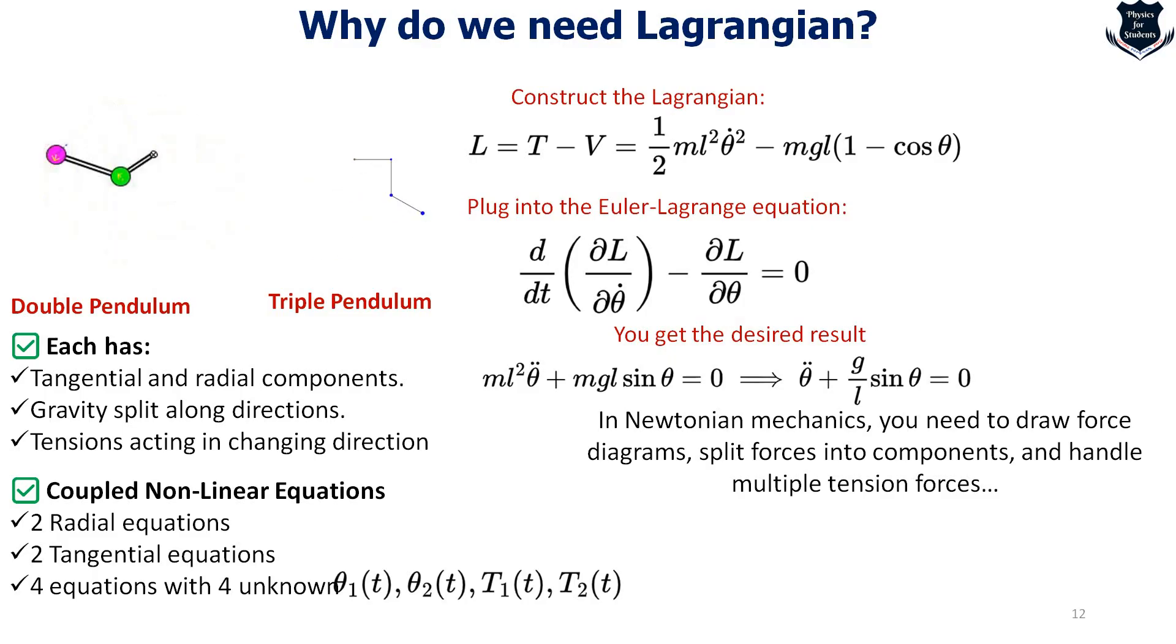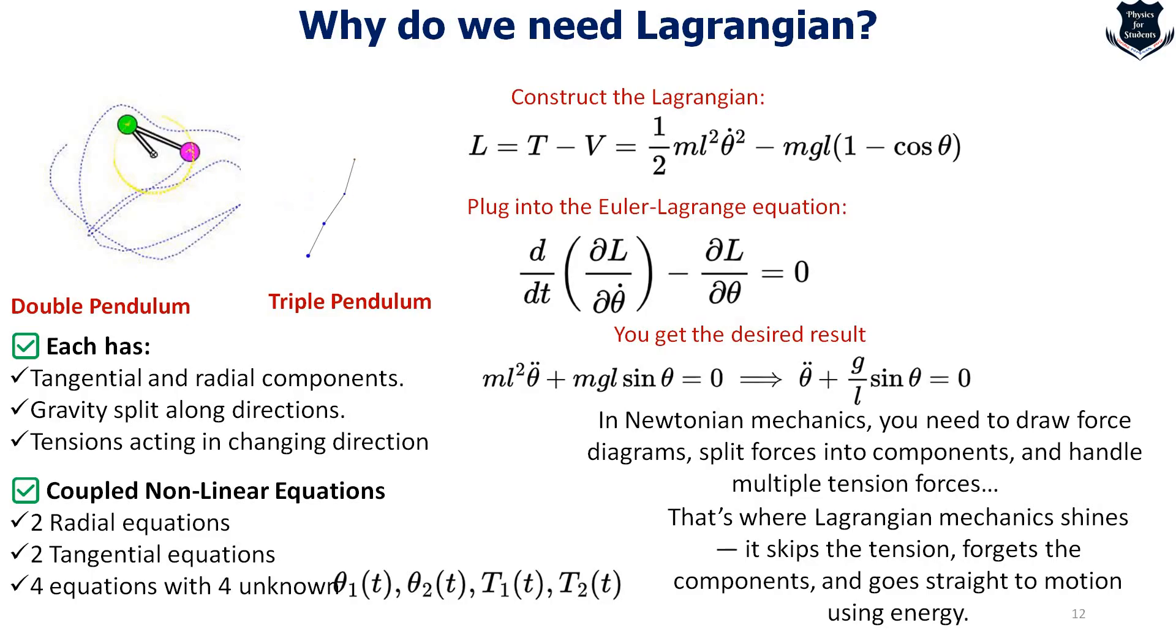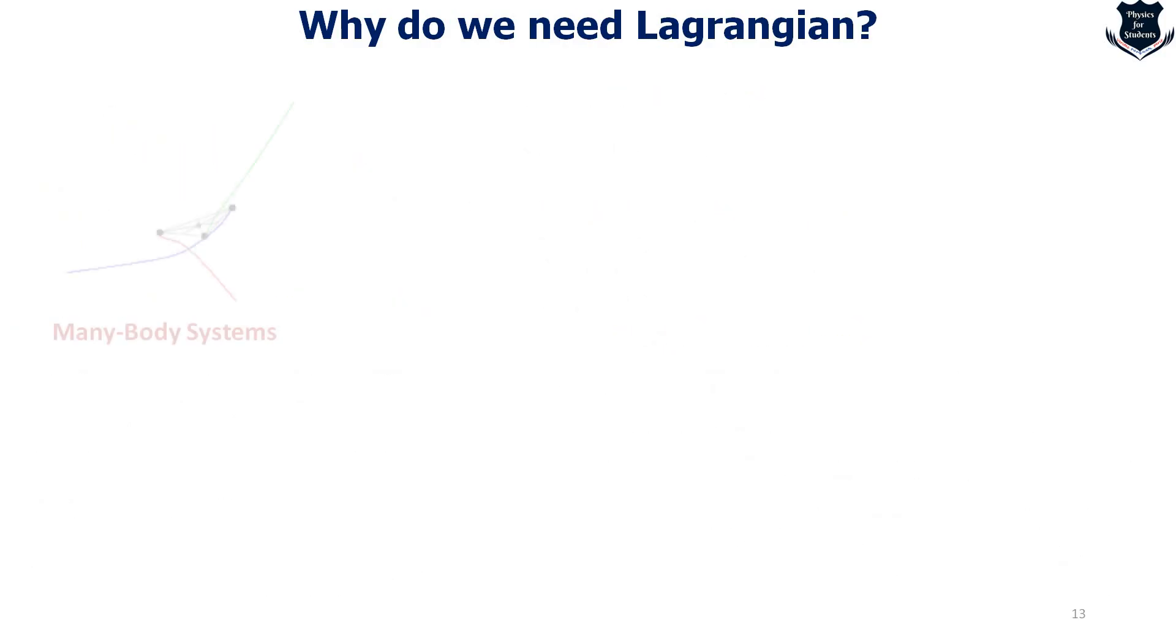What you see here is not just math, it is what naturally emerges when you apply the Euler-Lagrange equation to a pendulum. You are not tracking forces directly, you are defining a Lagrangian, that means the kinetic minus potential energy, and from that the motion just falls out. This is the beauty of the Lagrangian approach. It leads you to the same equation of motion but with less force hunting, with less amount of complications.